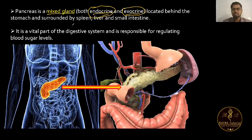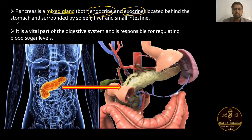The pancreas is a mixed gland located behind the stomach, and surrounded by the spleen, liver, and small intestine.